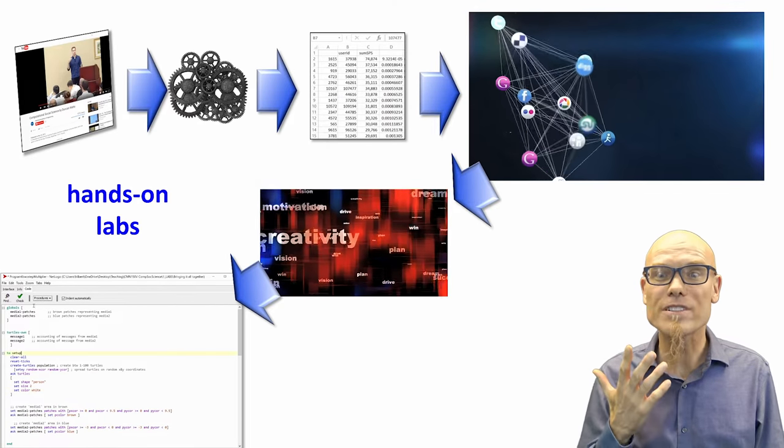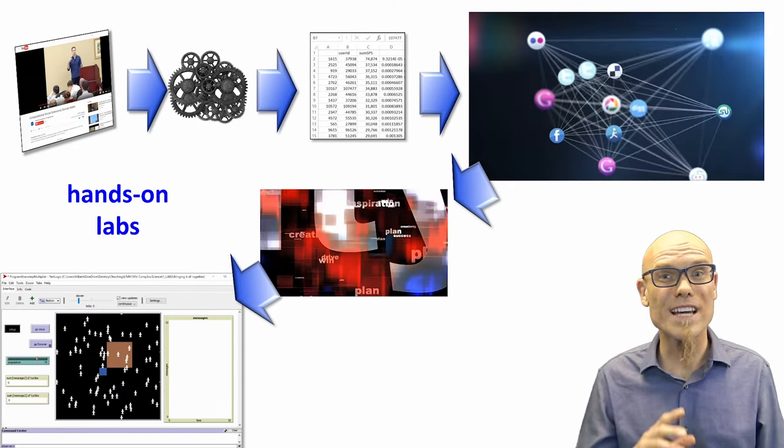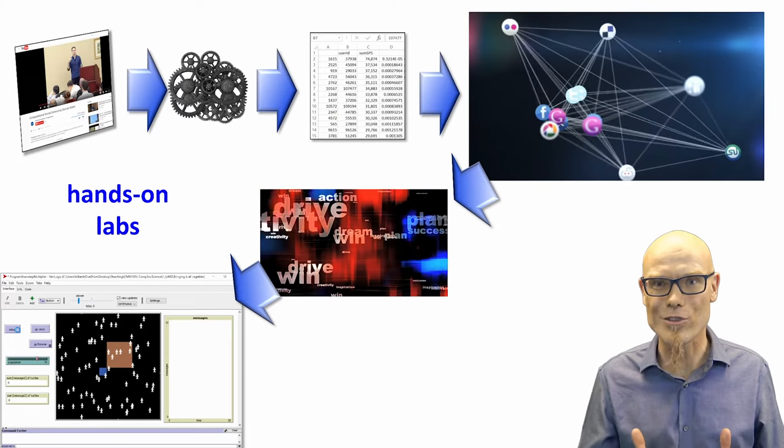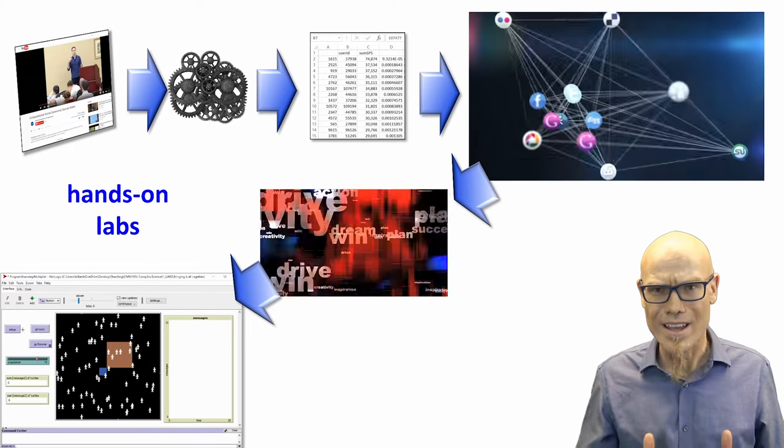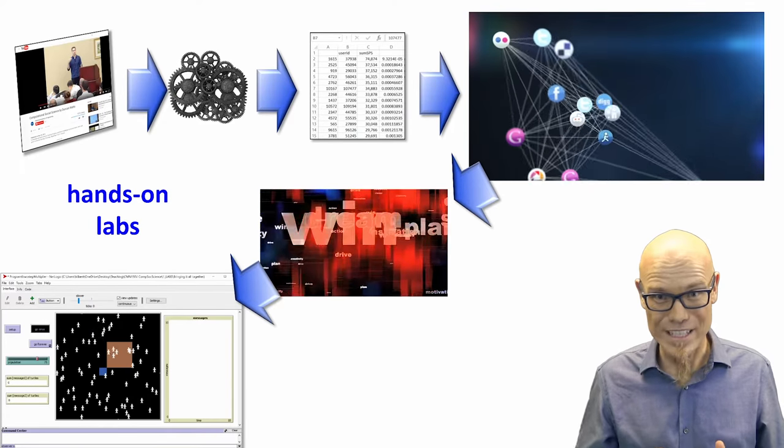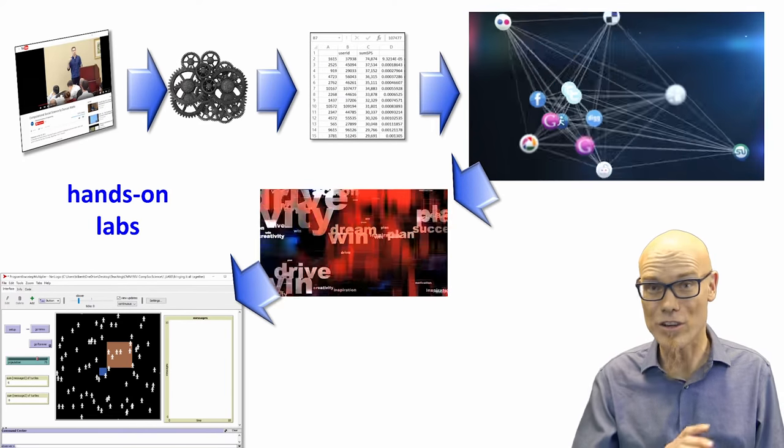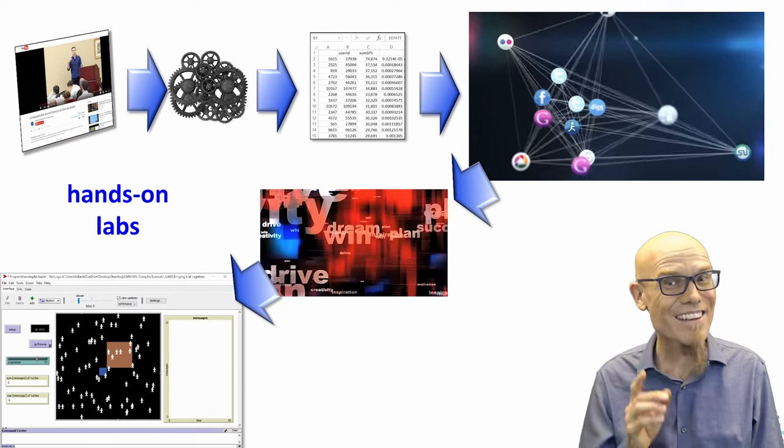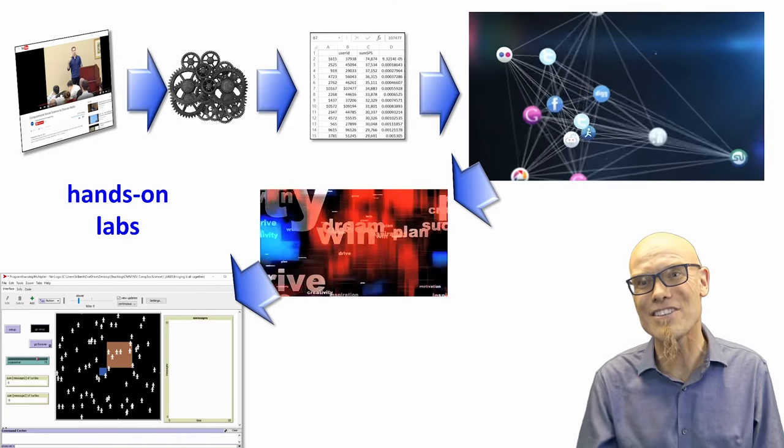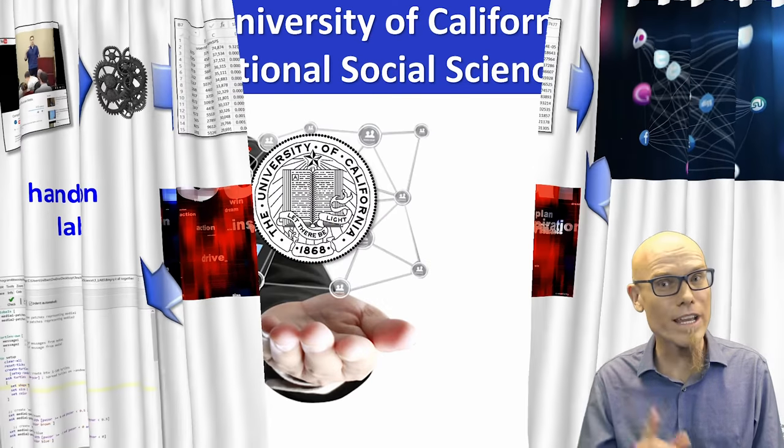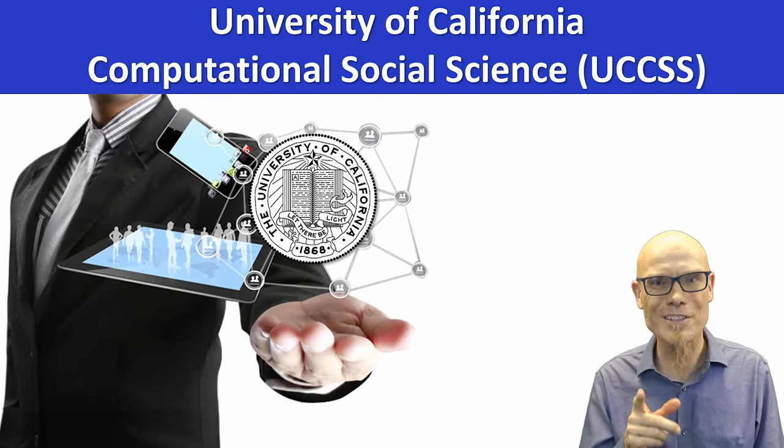Right now, the five most valuable companies on planet Earth are all doing computational social science in some shape or form. And during the century to come, much more is to be discovered about society. So we need all the help we can get, and we are very excited that you are joining us on this journey, a journey which, by the way, will also be a lot of fun.